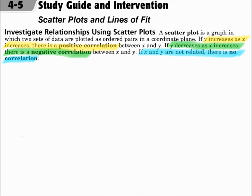When you do scatter plots: plot the points, determine if there's a correlation, and then draw the line that looks like it best goes through those points. Then you will use two of the points on or close to that line to write slope-intercept form.